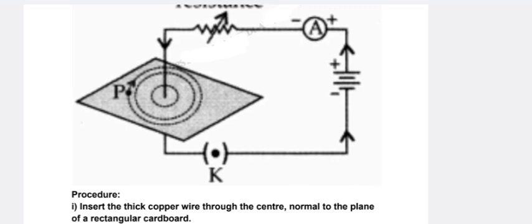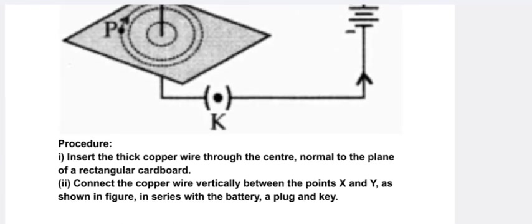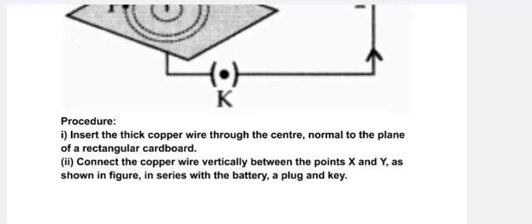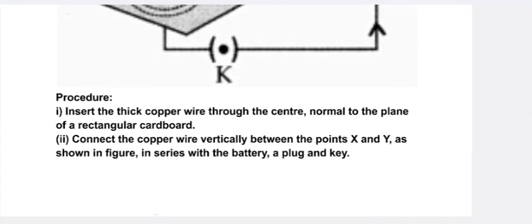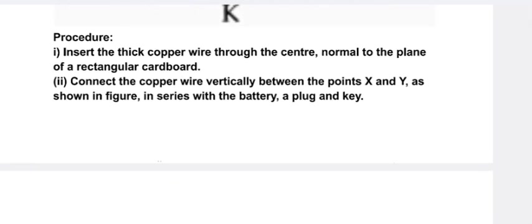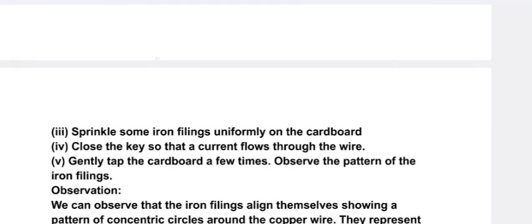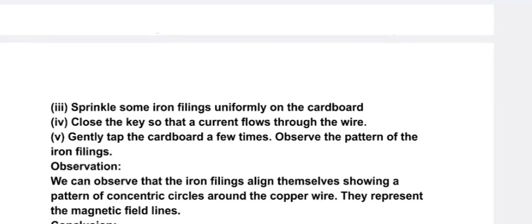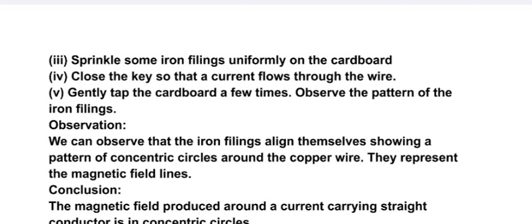Procedure: insert the thick copper wire through the center, normal to the plane of a rectangular cardboard. Connect the copper wire vertically between the points X and Y as shown in figure, in series with battery, a plug, and a key. Sprinkle some iron filings uniformly on the cardboard. Close the key so that the current flows through the wire. Gently tap the cardboard a few times. Observe the pattern of the iron filings.